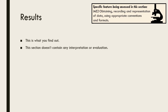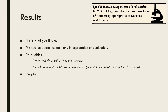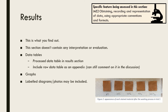The next section is the results. This section doesn't contain any interpretation or evaluation, but is simply a summary of the data. This includes data tables and graphs. You may also wish to include labelled photos to aid in your discussion, but this is purely optional — only do this if it adds value to your report. It is also important to ensure that you represent both the individual and class data in your results section. Let's look at the appropriate conventions for tabulation and graphing in more detail.